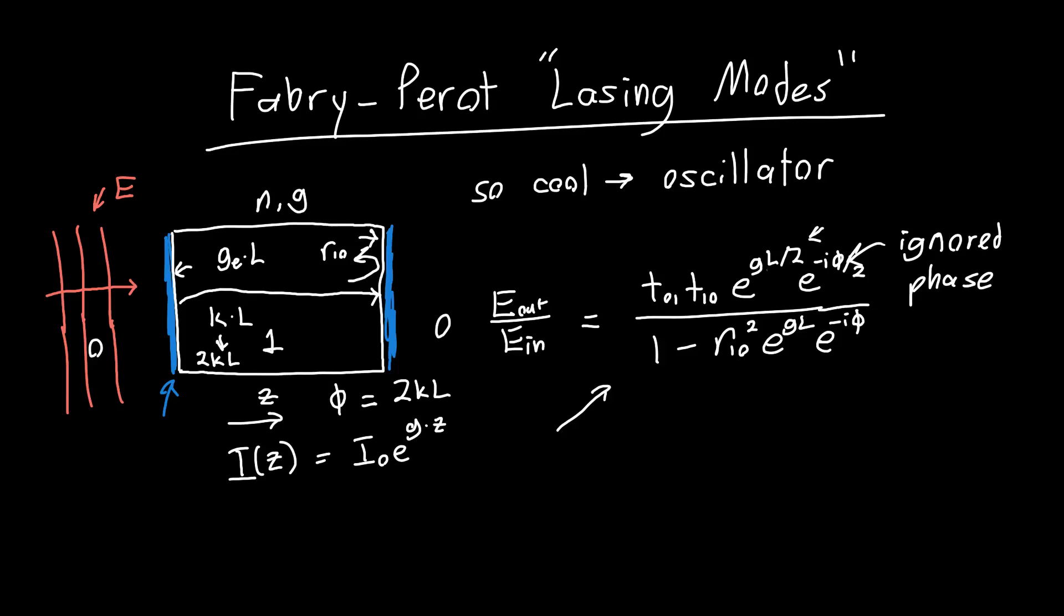And let's just clean this up a little bit over here. And you could have said it was e to the i phi over 2, or e to the i phi. It just depends on whether you want your plane wave to be omega t minus kz, or cosine of kz minus omega t. It's really a matter of preference.